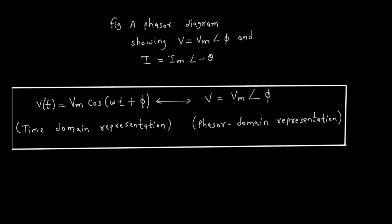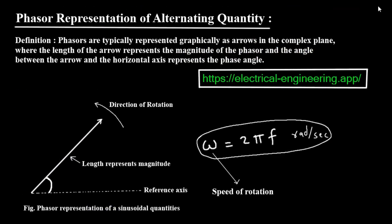In conclusion, we've learned that a phasor is a rotating vector that provides a simple way to represent a sinusoidal quantity. Its length represents the peak amplitude, and its angle represents the phase. We saw how the vertical projection of this rotating phasor traces out a sine wave, creating a direct link between the two concepts. We use phasors to easily visualize and understand leading and lagging phase differences. And finally, we explored the mathematical representation of phasors as complex numbers in both rectangular and polar forms, which is the key to simplifying AC circuit analysis. Understanding phasors is a gateway to mastering AC circuits. Thank you for watching.